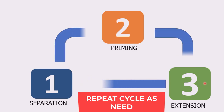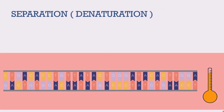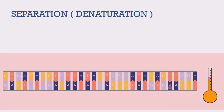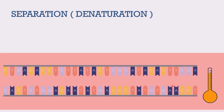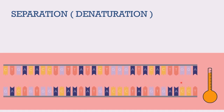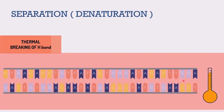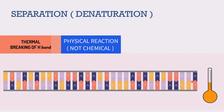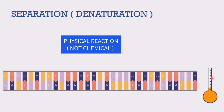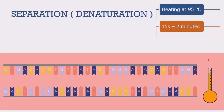Step one is separation, which means denaturation. You simply separate the two strands of the DNA helix into single strands by breaking the hydrogen bonds between them. The step of separation is accomplished by maintaining the temperature at 95 degrees Celsius.